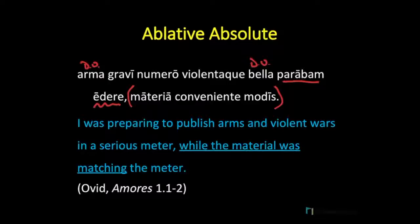Start with the noun-participle translation: 'With the material matching.' Or, we might revise to: 'While the material was matching the meter — modis.' The idea is that if you were writing epic poetry, you would write it in an epic meter, that is, dactylic hexameter. But as Ovid says later in this poem, Cupid came along and forced him to write in a meter more suited to love poetry — that is, the elegiac couplet.